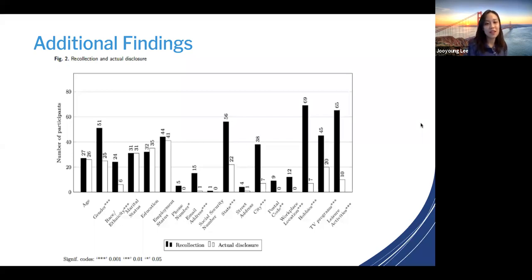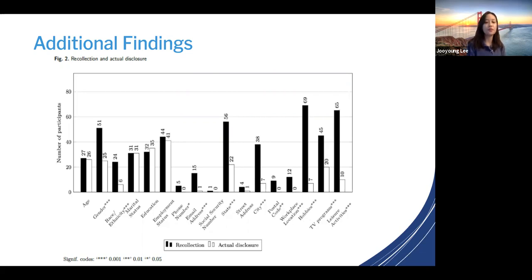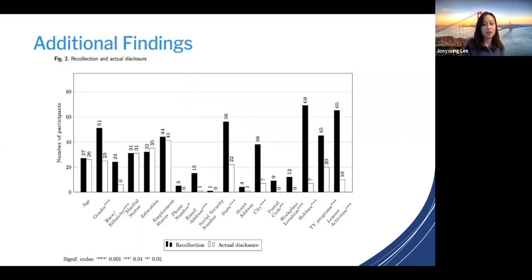Our additional findings were pretty interesting, as they were different from our research questions. These findings illustrated that people actually didn't share as much compared to their recollection. For specific categories such as race, city and state information, hobbies, TV programs, and leisure activities, we found that people thought they had disclosed more but they didn't actually disclose it in their tweets. This highlights that people don't really remember what they're sharing online, which can lead to serious privacy threats.